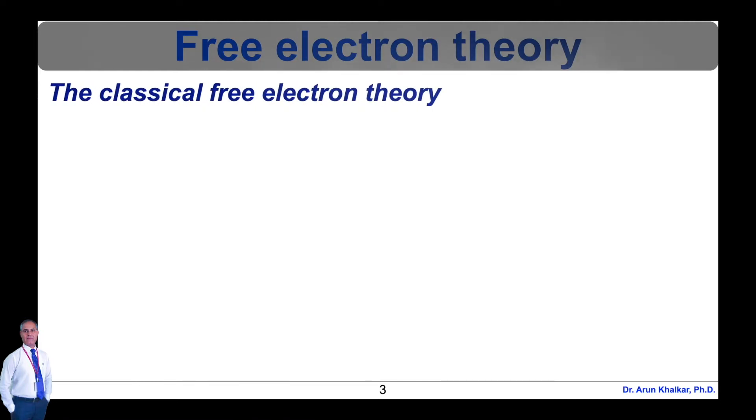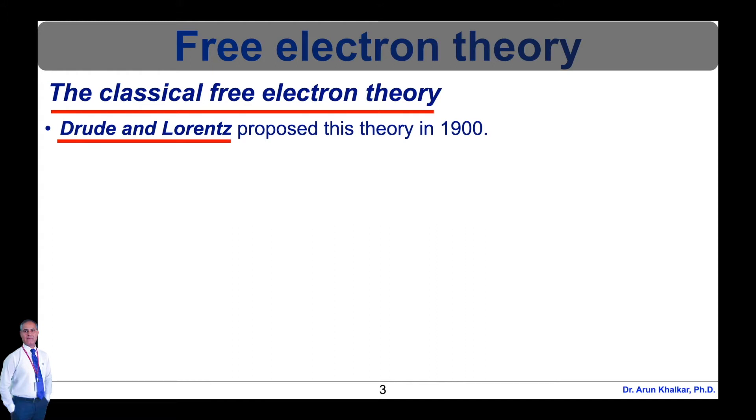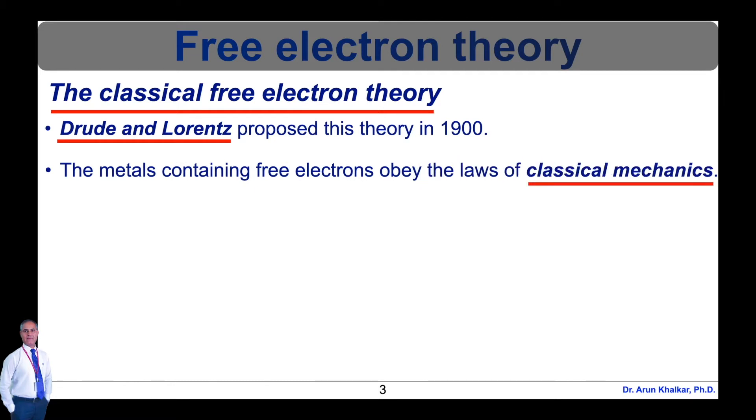The theory has been developed in three main stages. First is the classical free electron theory. Drude and Lorentz proposed this theory in 1900. According to this theory, the metals containing free electrons obey the laws of classical mechanics, treating a metal as containing a gas of electrons completely free to move within it. The theory describes and correlates the electrical and thermal properties of metals.